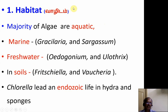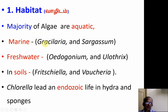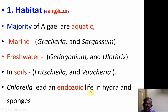The first general character is habitat. Majority of algae — about 99% — are aquatic. They can be marine, such as Gracilaria and Sargassum, or freshwater. Some algae also grow in the soil. Chlorella leads an endozoic life, living inside other organisms such as hydra and sponges.